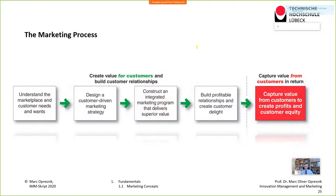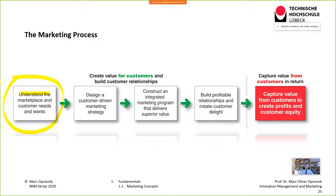The marketing process starts with understanding the marketplace and customer needs and wants. Then you design a customer-driven marketing strategy — first think about customer problems, then come out with problem-solving products or services. You construct an integrated program that delivers superior value, thinking about all the four P's: product, price, place, and promotion. In the end, you build profitable relationships and create customer delight. That is what marketing is all about.